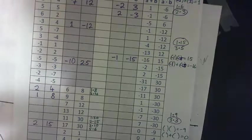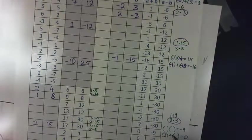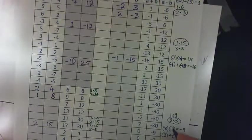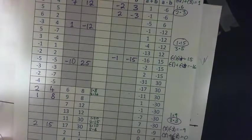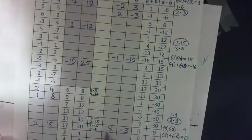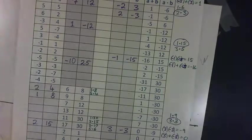If you take 3 plus negative 3, those add to 0. And if you multiply them, 3 times negative 3 gives you negative 9. So positive 3 and negative 3 will work — they add to 0 and multiply to negative 9.